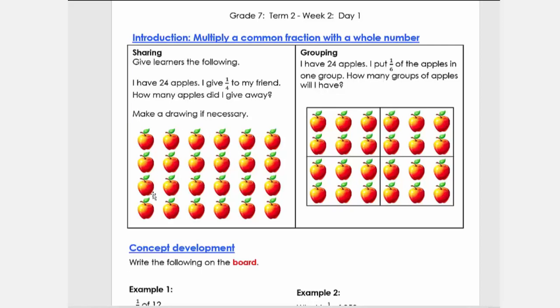What they do is they simply look at this picture. They know the number sentence will be 24 times a quarter or a quarter of 24, but because of the drawing they can just look at it and say, okay, a quarter of 24 is 6.